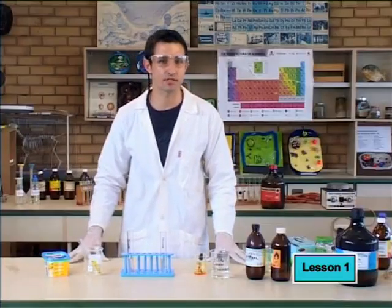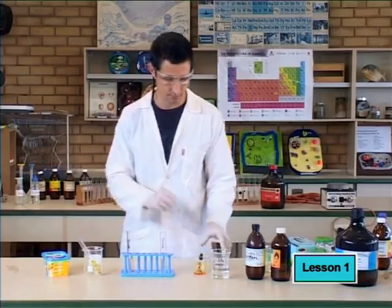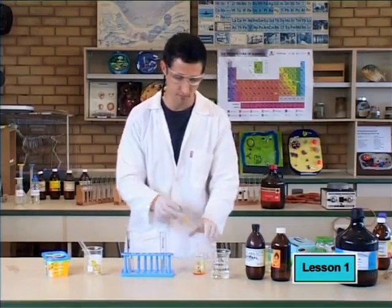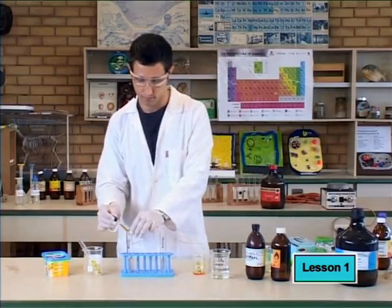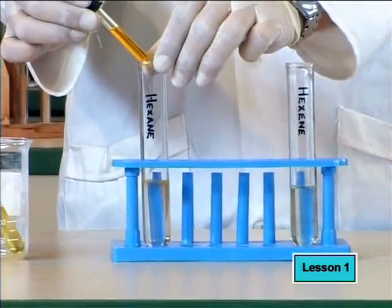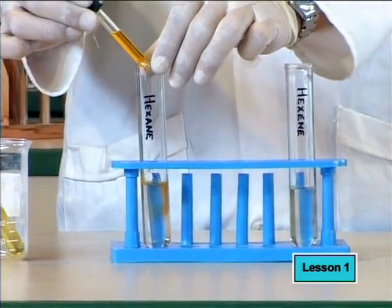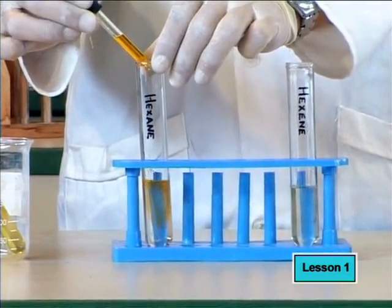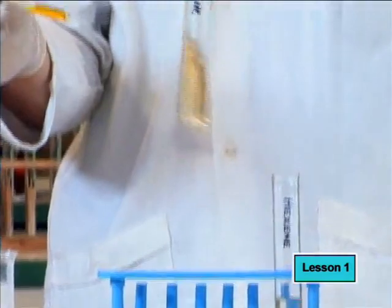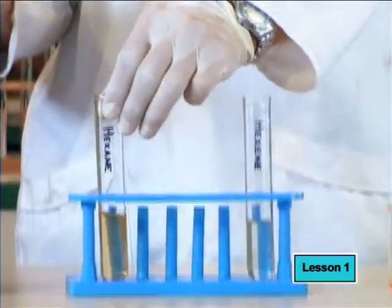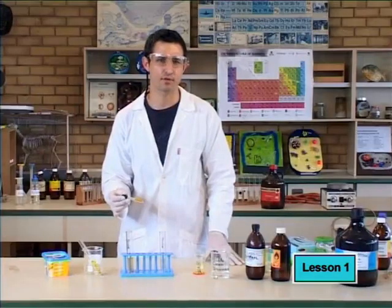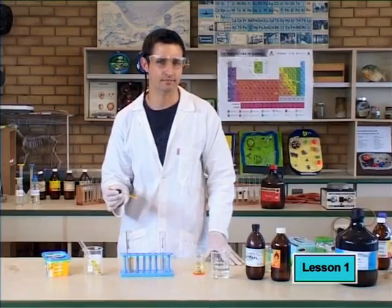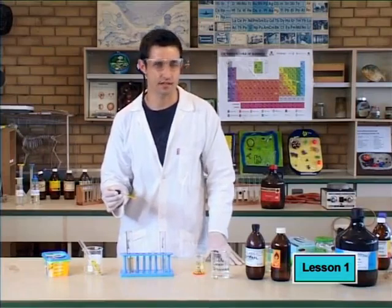We add the red-brown bromine mixture to the hexane first. Hmm, it seems that nothing happens to the color of bromine when it's added to the hexane. Let's try hexene and see what happens.